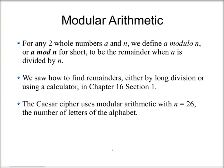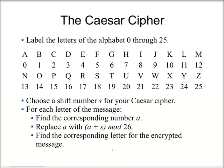The Caesar Cipher is going to use modular arithmetic with N equal to 26, which is the number of letters in the alphabet. Here I've labeled the letters of the alphabet 0 through 25 in this chart. To implement the Caesar Cipher, first you choose a shift number S between 1 and 25. Then for each letter of the message you want to encrypt, find the corresponding number A. So if I wanted to encrypt C, the corresponding number would be 2. Then replace that number with A plus S mod 26, and find the corresponding letter for the encrypted message. So if I was shifting by 4, 2 plus 4 is 6 mod 26, and the corresponding letter would be G.